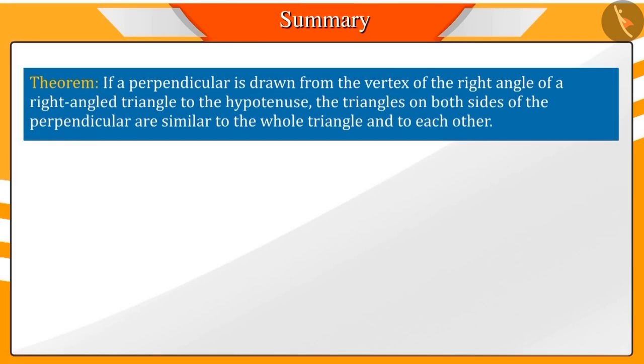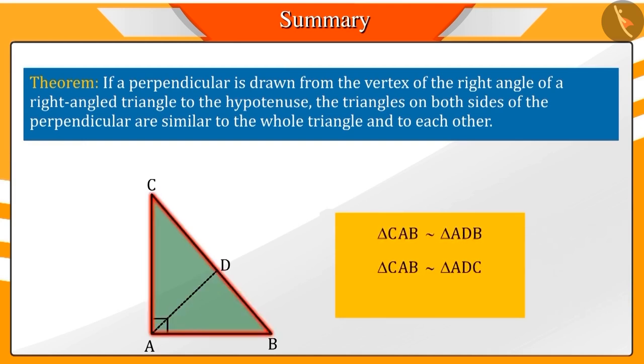In this video, we learned that if a perpendicular is dropped on the hypotenuse from the right-angled vertex of a right-angled triangle, then the triangles on either side of this perpendicular are similar to each other.